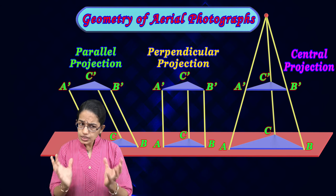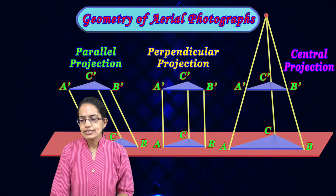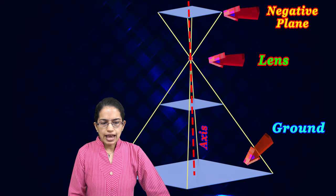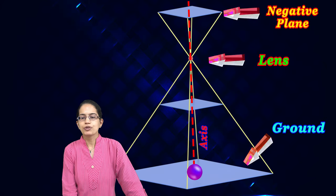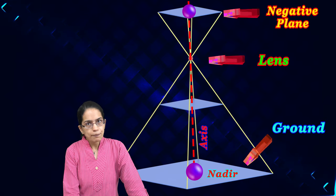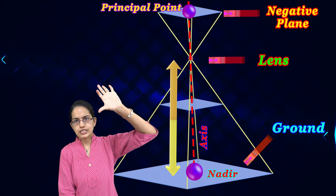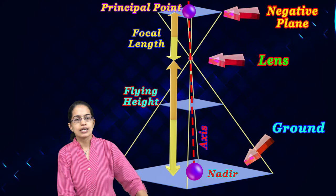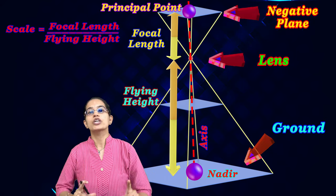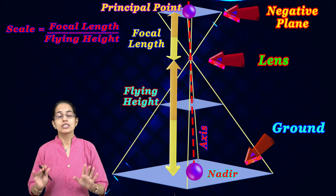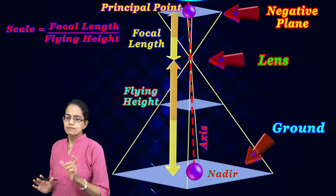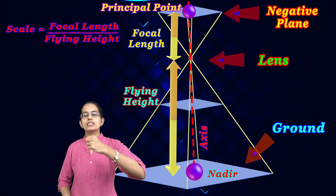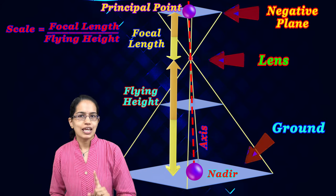Revisiting these concepts: from the camera axis, the line going perpendicularly down to the ground is the nadir, and on the image plane above is the principal point. The height at which the aircraft flies is the flying height, and the corresponding distance on the negative is the focal length. As discussed earlier, the ratio of focal length to flying height gives you the scale for the aerial photograph.